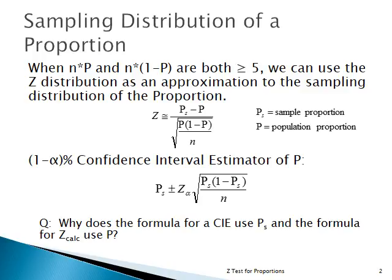Like all formulas for Z, when we use a Z statistic, we take the random variable minus its expected value divided by its standard deviation. The formula for converting to Z is P-sub-s minus P, divided by the square root of P times 1 minus P divided by N — all of that under the square root.